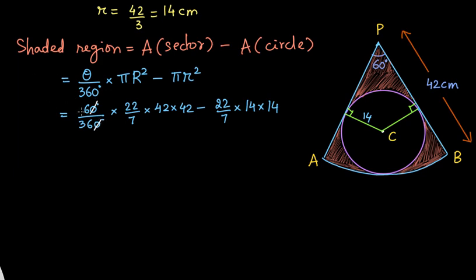So here 0 and 0 can be cancelled out. 6 ones are 6 and 6 6 are 36. Now here we have 42 on the numerator. So 6 times 7 is 42. So we can cancel this 6 and 7 with one of the 42's on the top. So again we can do 7 ones of 7 and 7 twos of 14. So finally we are having 22 into 42 minus 22 times 2 times 14 which is 28. Now this is a very simple calculation. So the answer will be 308. So 308 centimeter square. This is the area of the shaded region.